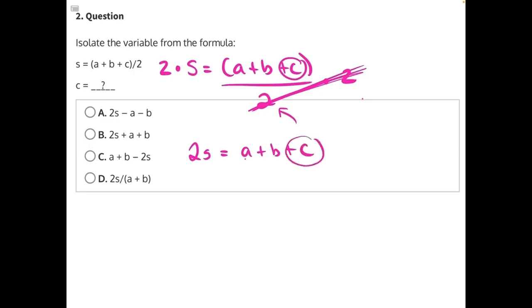We're still trying to isolate c, so everything else near c has got to go. a and b are both positives, they're both being added to c, and the opposite of addition is subtraction, so we can subtract both a and b from both sides of the equal sign, minus a minus b.